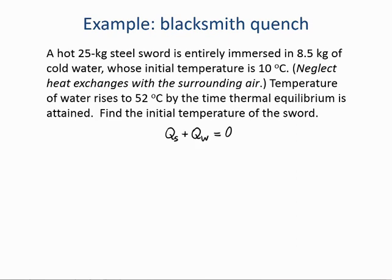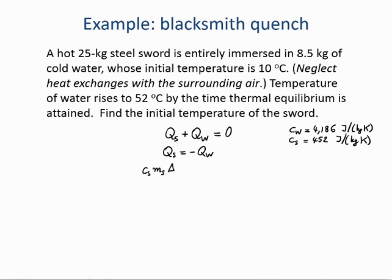The heat lost by the sword Qs is a negative quantity, whereas the heat gained by the water Qw is a positive quantity, so Qs equals negative Qw. We look up the specific heat capacity of water and that of steel, and write: specific heat capacity of steel times mass of steel times delta T steel equals negative C_water times M_water times delta T_water. Delta T_water is positive 42 Celsius degrees, which is the same as 42 Kelvin.